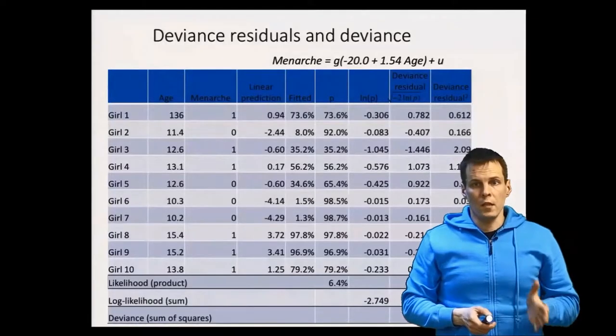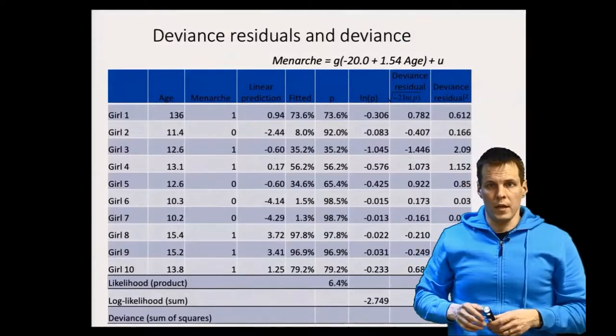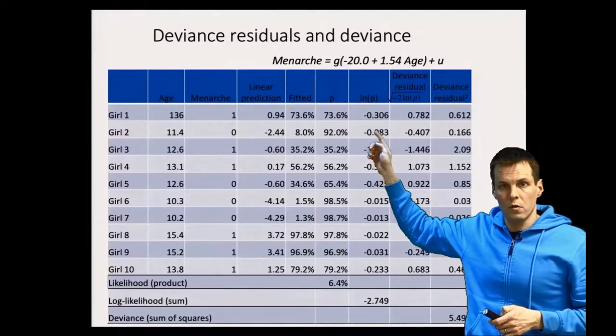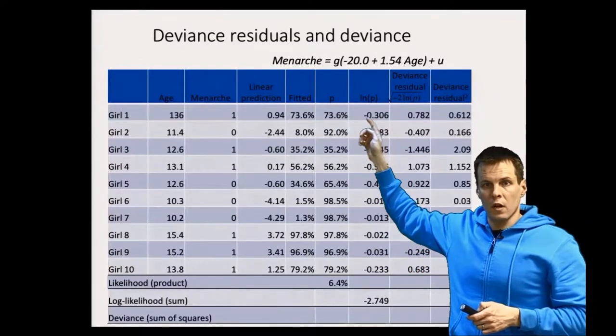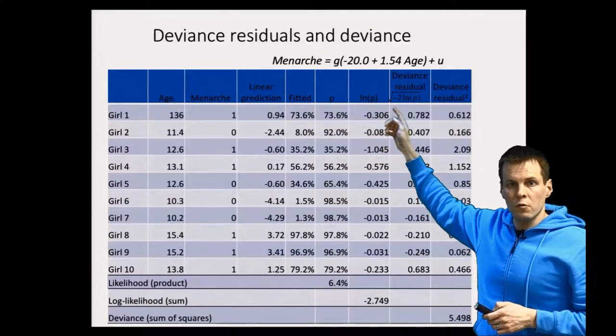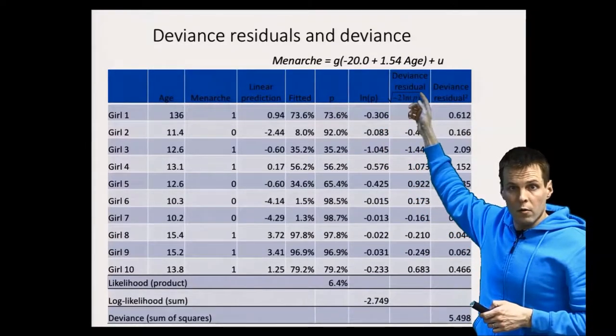Deviance residuals are calculated based on the individual observation log likelihoods. The deviance residual is minus two times the log likelihood, and then we take a square root.